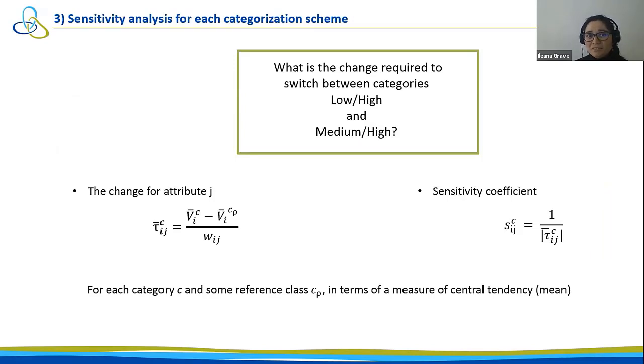In the third step, the question is, what is the change required to switch between categories low and high and medium and high? The change for attributes was calculated in terms of the equation on the left, tau. To have a more natural way of measuring this, the sensitivity coefficient with the inverse value of tau was calculated. This is a general sensitivity analysis because it is in terms of the measure of central tendency.